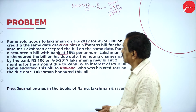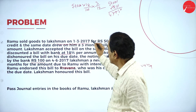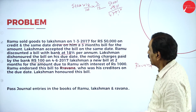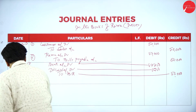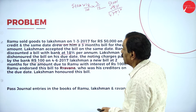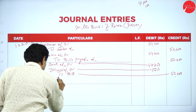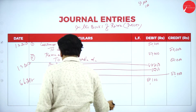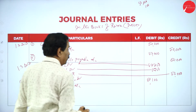On the due date: 1-3, 3 months is 1-6, plus 3 days = 4-6. Noting charges paid — Ramu pays on behalf of Lakshman. Amount of the bill is 50,000 plus noting charges 100 = 50,100. He pays 50,100 on behalf of Lakshman. Lakshman account debit 50,100 including noting charges, to cash account 50,100.